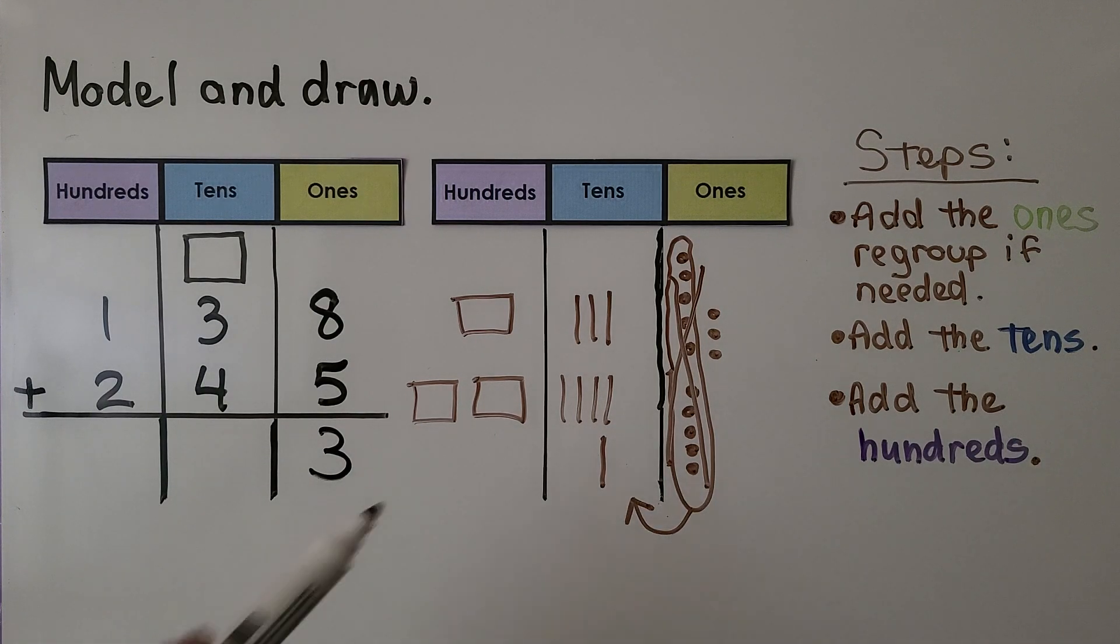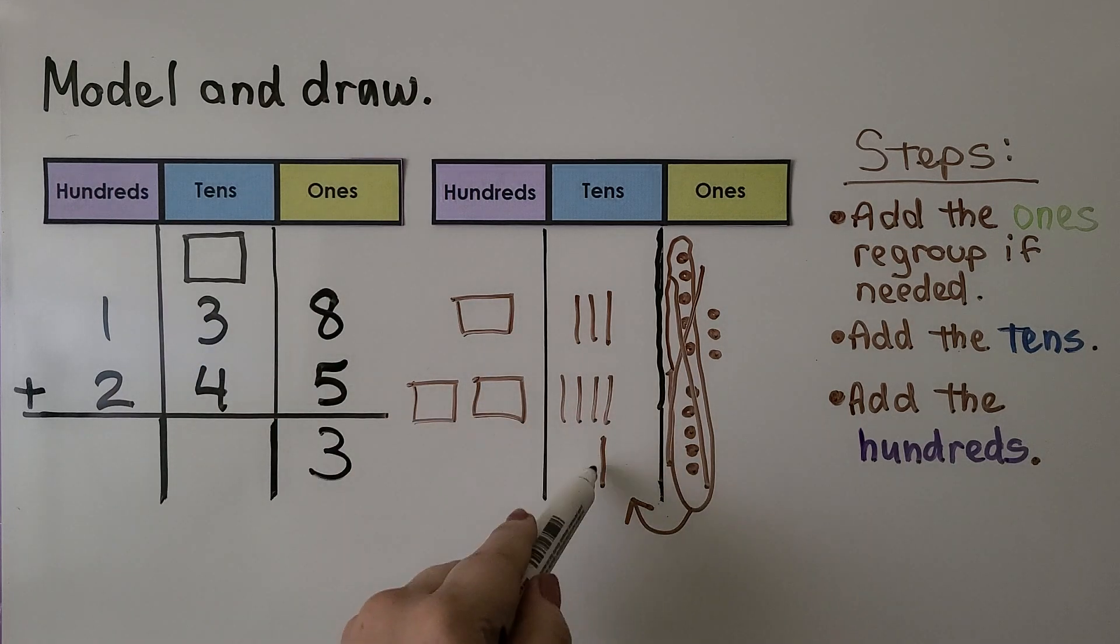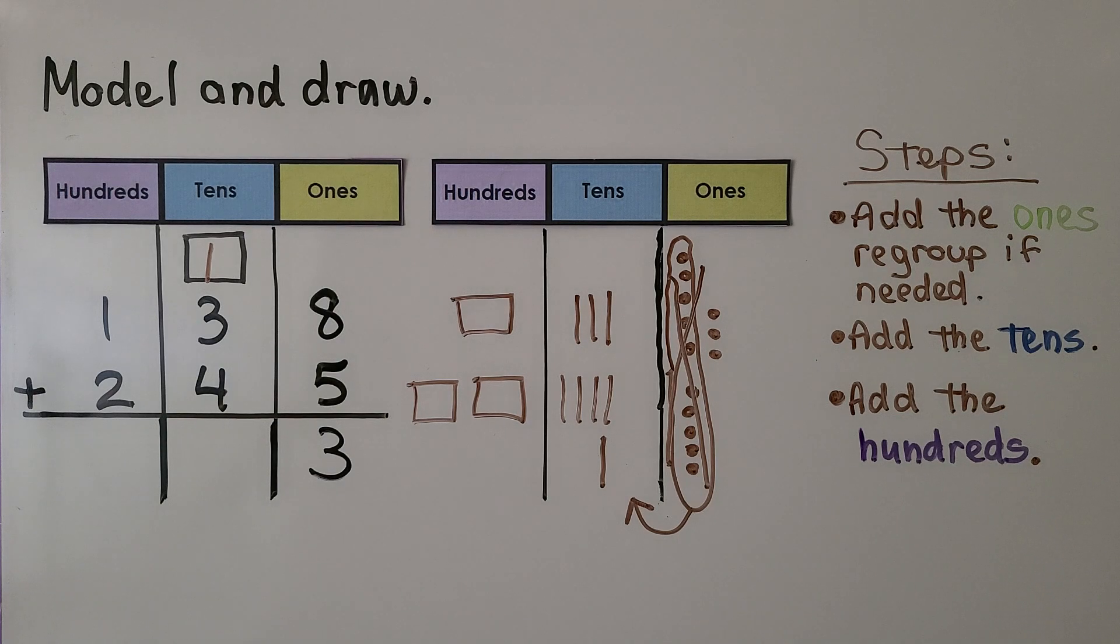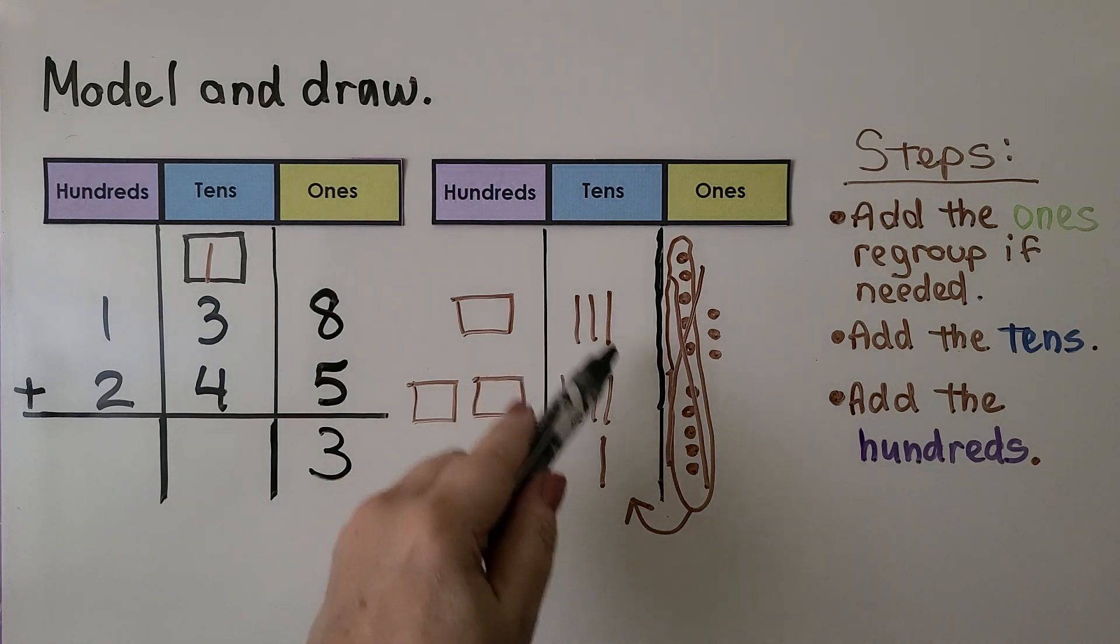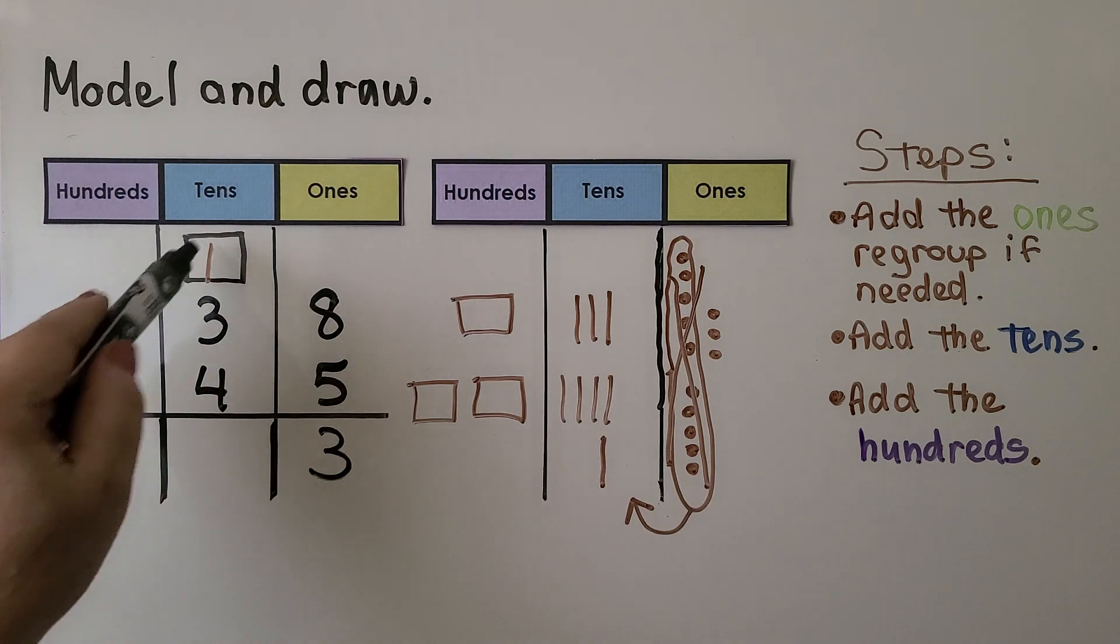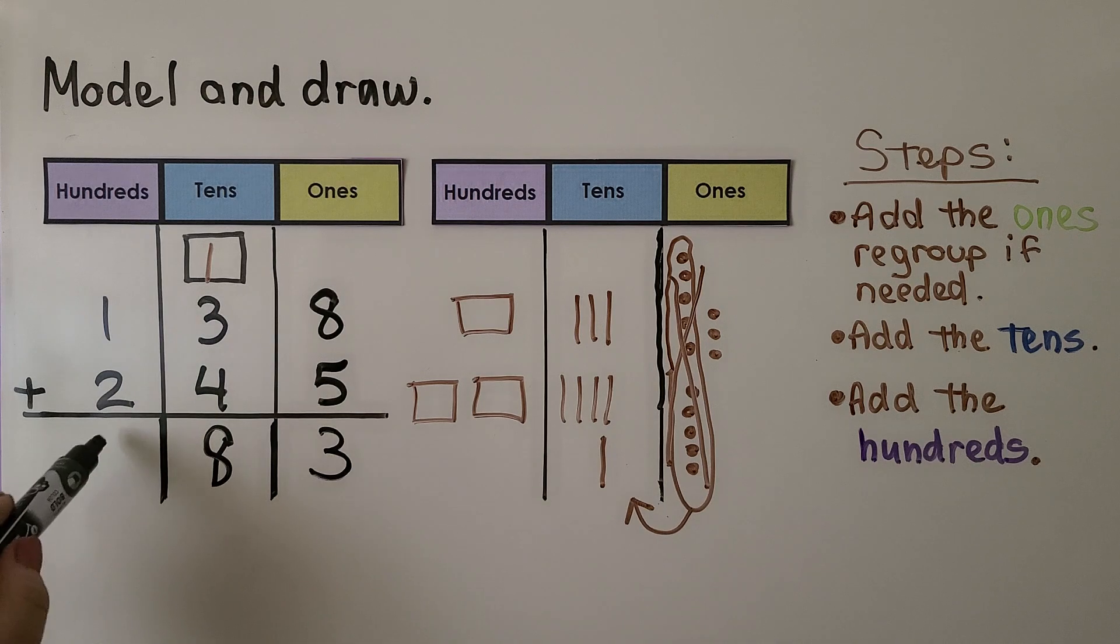We have three tens, four tens, and the one we regrouped. We add them together. We have three and four is seven. That's eight. Three and four is seven and one more is eight. We have eight tens. We count the hundreds. We have three hundreds. It's 383.